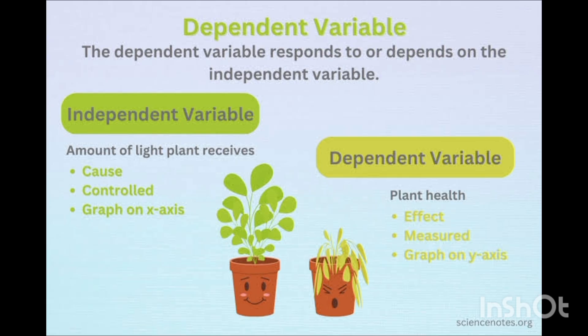The dependent variable responds to or depends on the independent variable. 'Dependent' means you have to depend on another variable, and 'independent' means you are not dependent on any other thing. So the independent variable is like the amount of light a plant receives, and the dependent variable is plant health. The independent variable is like a cause — it can be controlled and plotted on the x-axis.